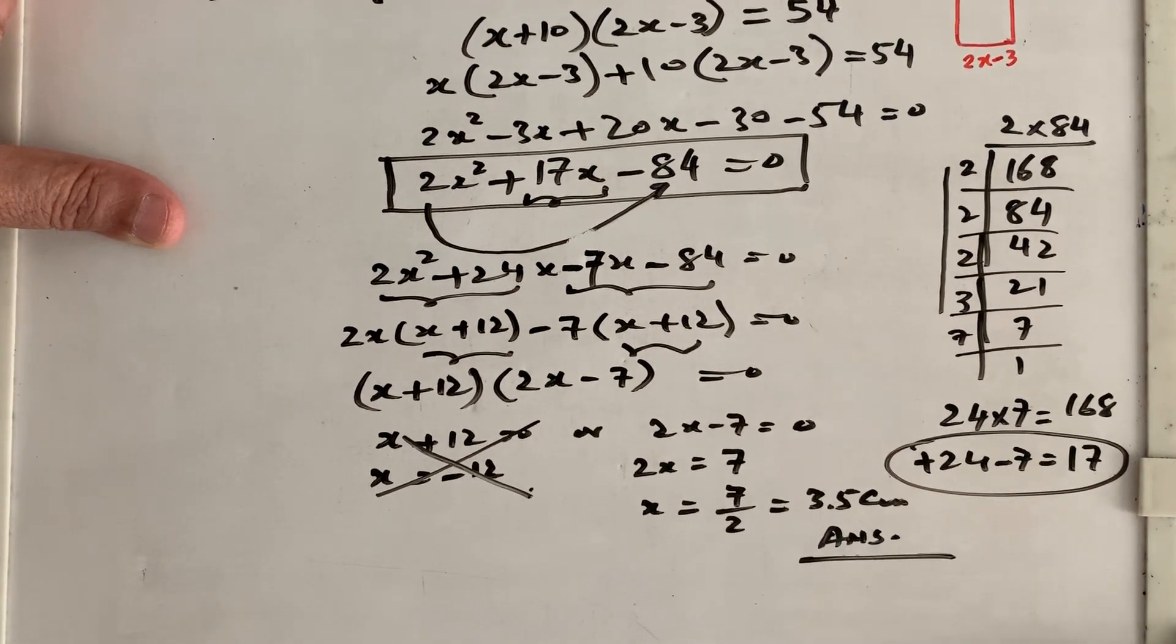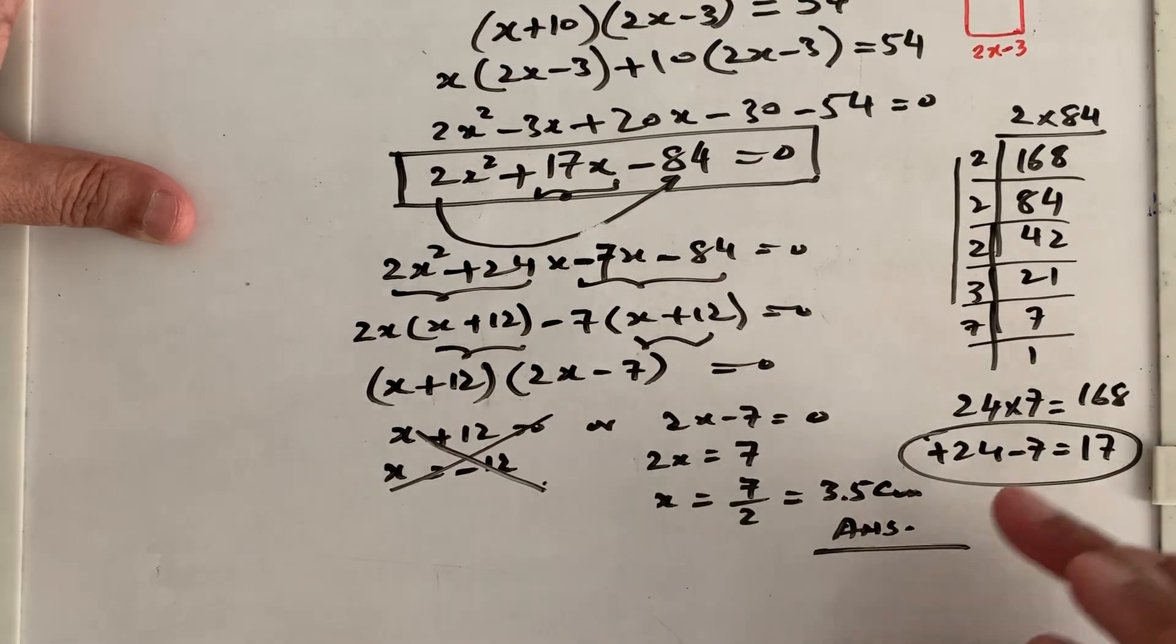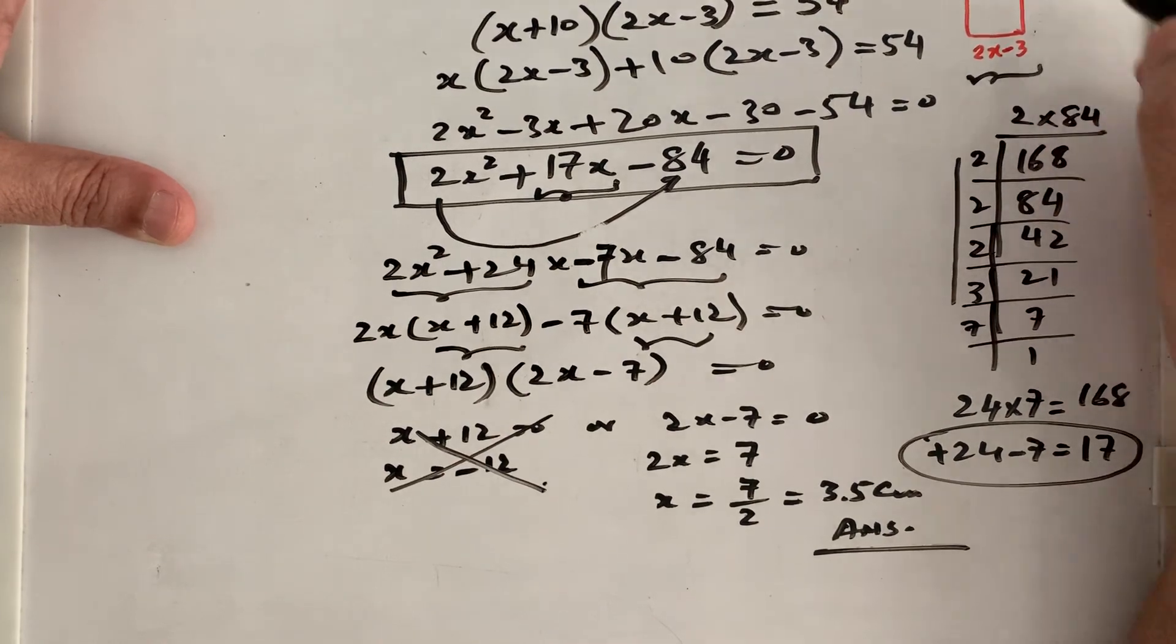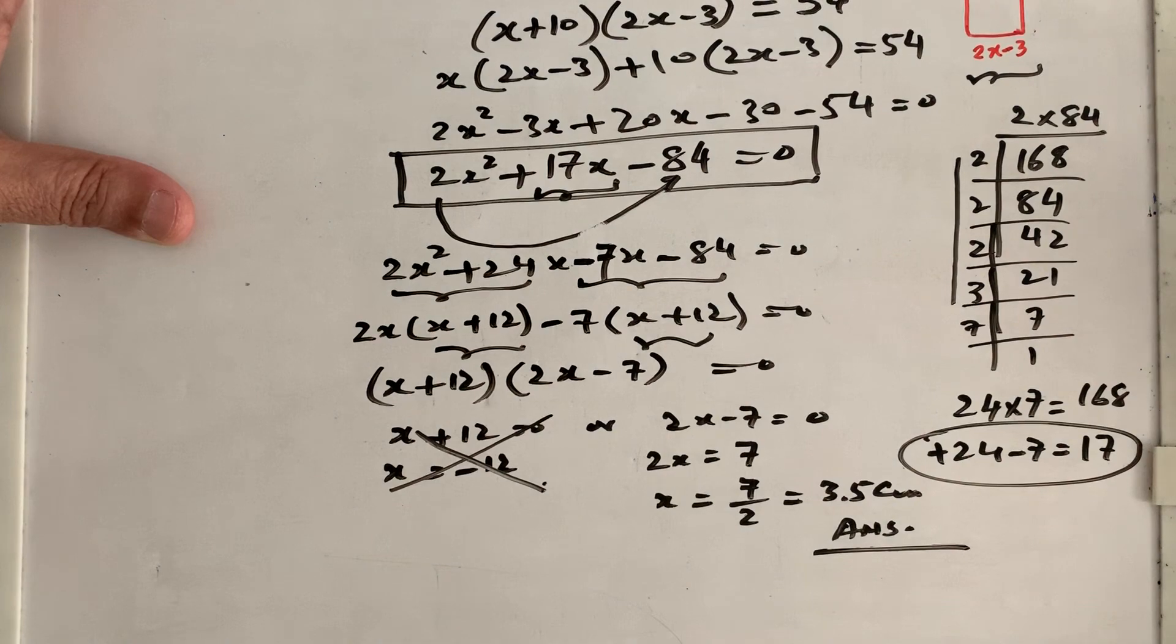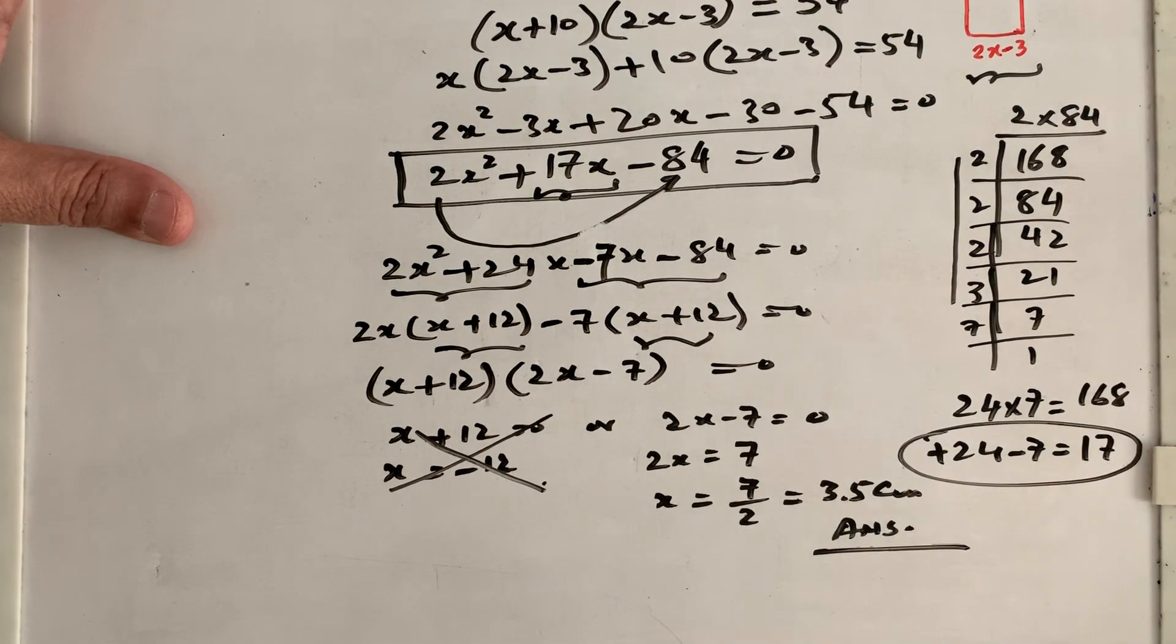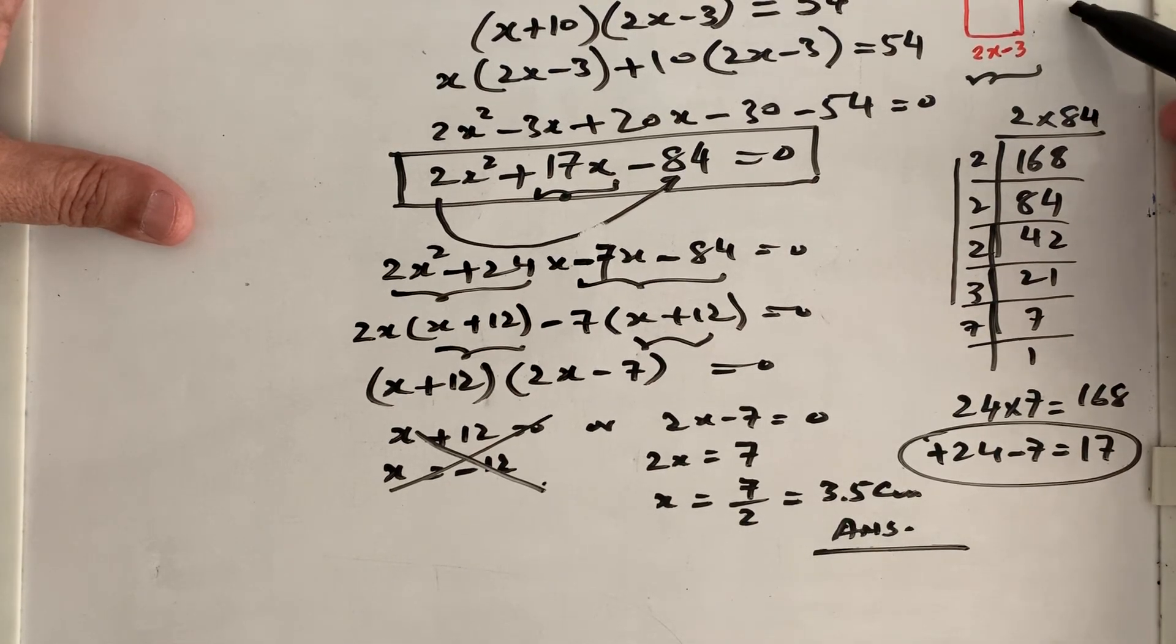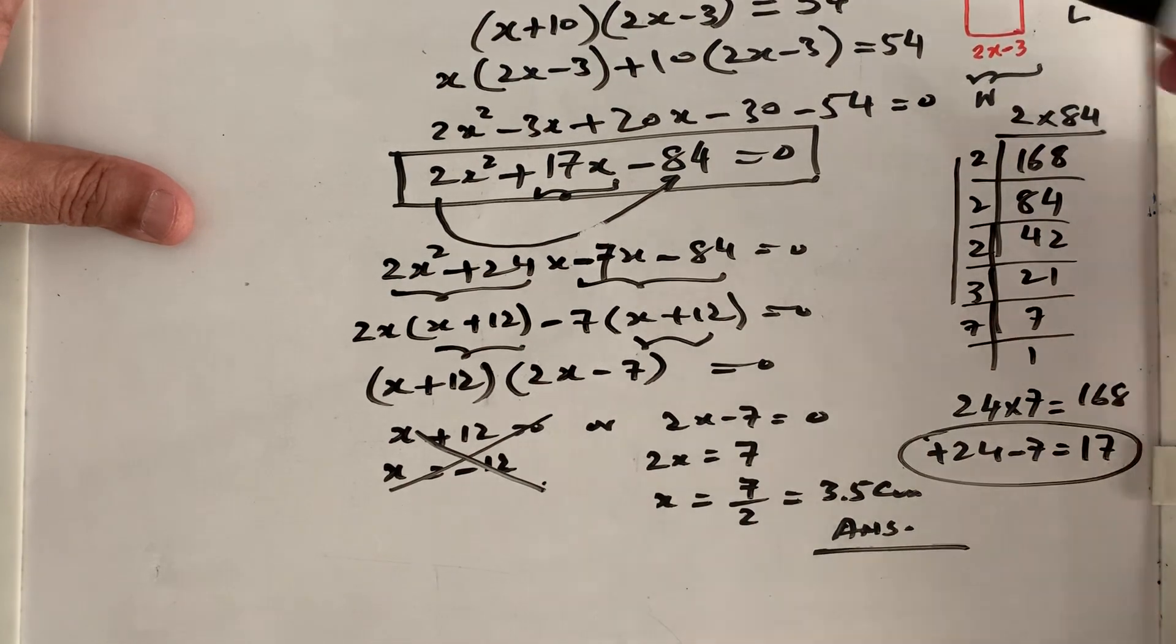If x is 3.5 centimeter, then if I substitute back into this equation, I will get this area of 54 centimeter squared. I can give you this task as a homework. You can go ahead, substitute this value of 3.5 into these two expressions. Get your length and width. This is your length, this is your width. Get them and then multiply them to get 54.